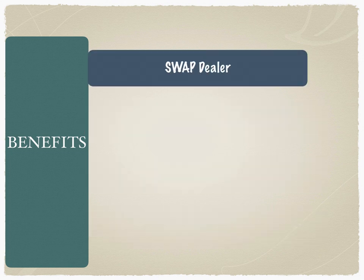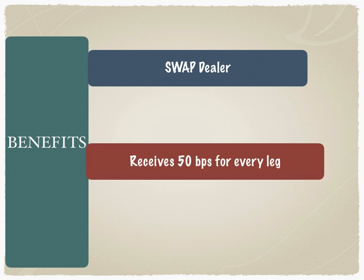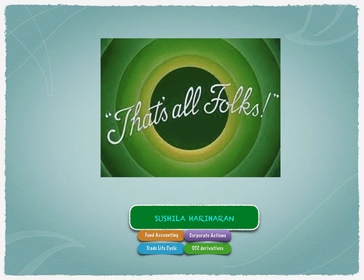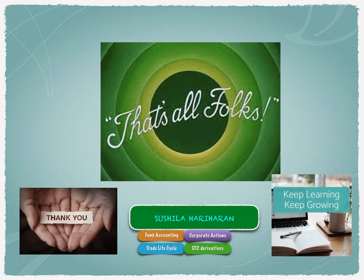Is it beneficial to the swap dealer? Of course — this is what investment banking is all about: taking and grabbing opportunities and making money on every leg of every transaction. The swap dealer receives 50 basis points for every leg of the cash flows — not just once, but on every cash flow payment date. Whether it's AAA or BB making a payment, the swap dealer always collects 50 basis points per leg. If you like such content, please subscribe to my YouTube channel. Keep learning and keep growing. Thank you.